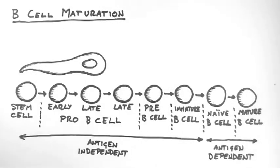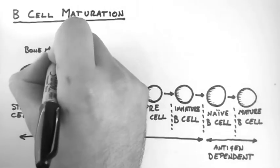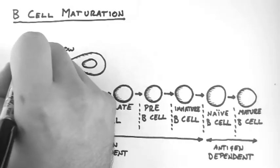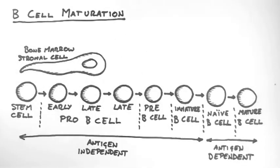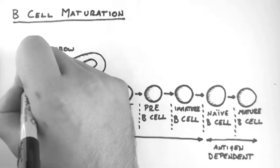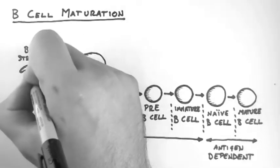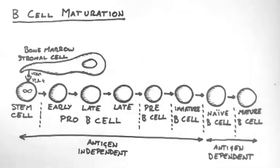So let's see how all this happens. This big cell up here is a bone marrow stromal cell and it is required to send a series of signals to get the process started. Initially, the stem cell binds to the stromal cell via the binding of a protein called VCAM1 on the stromal cell to VLA4 on the stem cell.